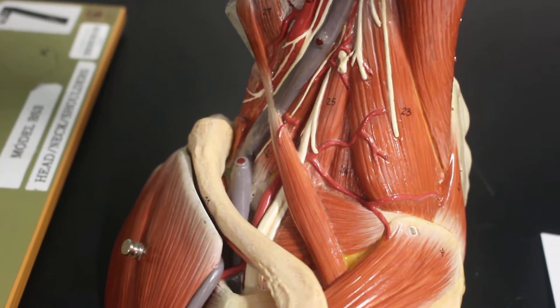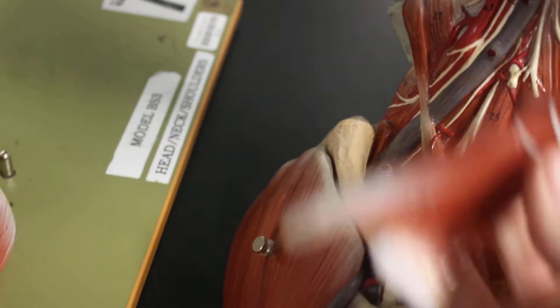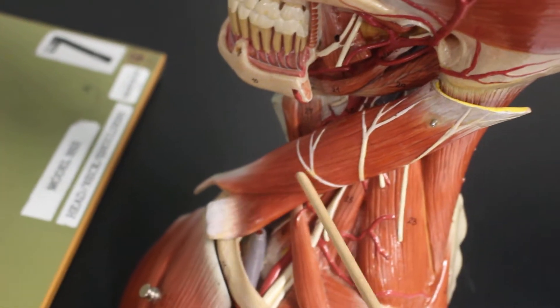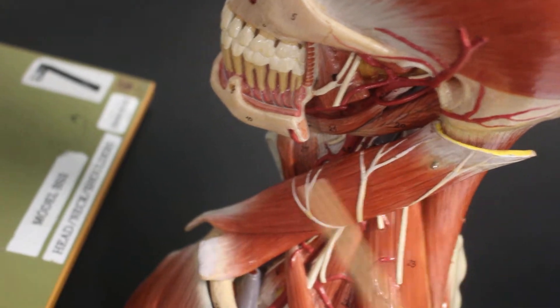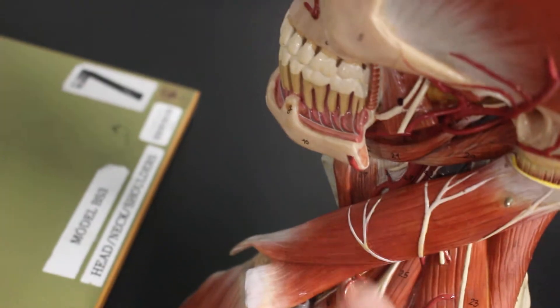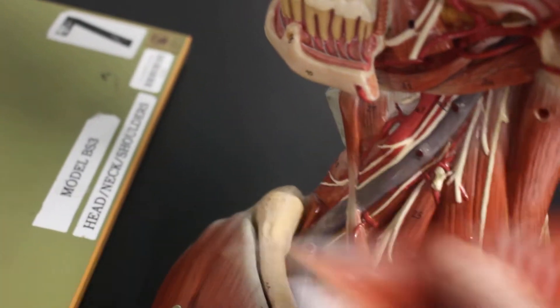From there we have this fun muscle here. This muscle here is sternocleidomastoid going from the mastoid process to the temporal bone down to the clavicle and sternum. That's a more superficial muscle.